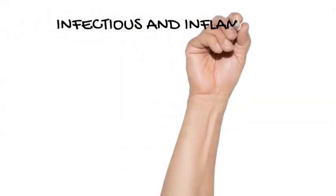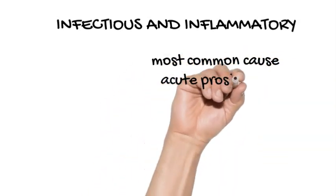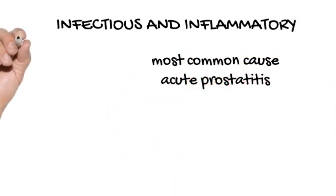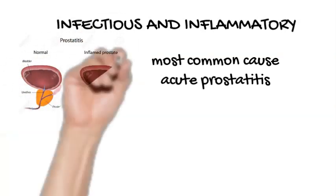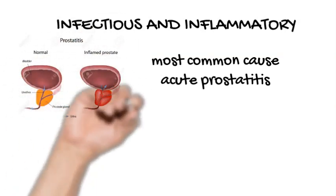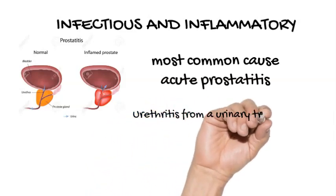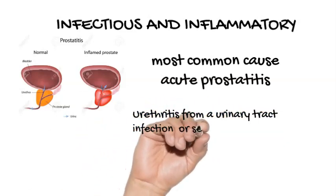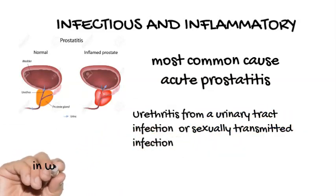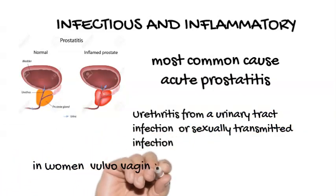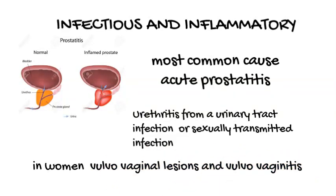Infectious and inflammatory causes. The most common cause of infectious acute urinary retention is acute prostatitis. Urethritis from a urinary tract infection or sexually transmitted infection can cause urethral edema with resultant urinary retention. In women, painful vulvovaginal lesions and vulvovaginitis can cause urethral edema, as well as painful urination, which also results in urinary retention.